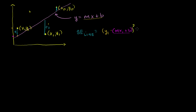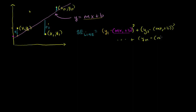Then you do the same thing for the second point — and we started our discussion this way. (y2 − (mx2 + b))² and so on, all the way to the nth point: (yn − (mxn + b))².